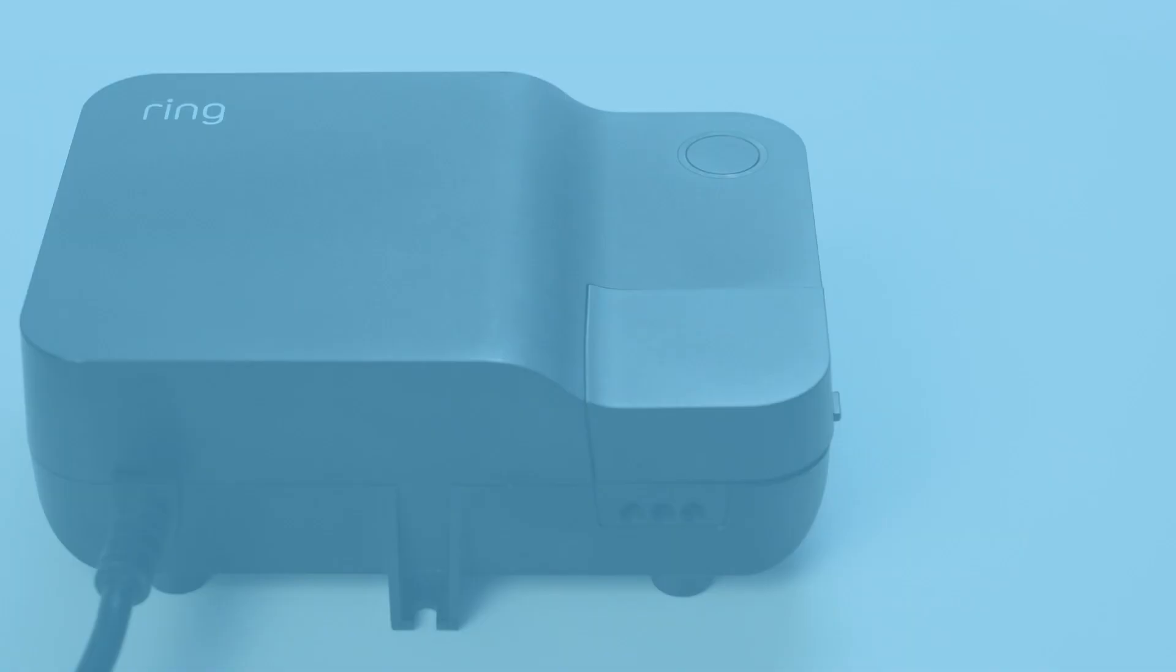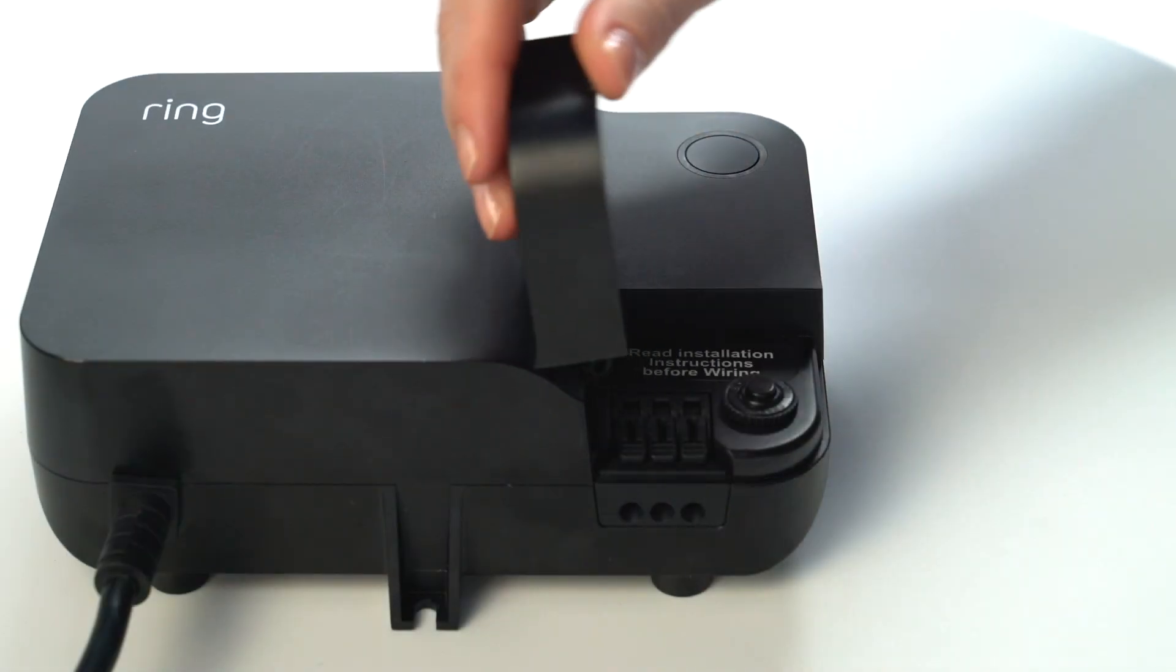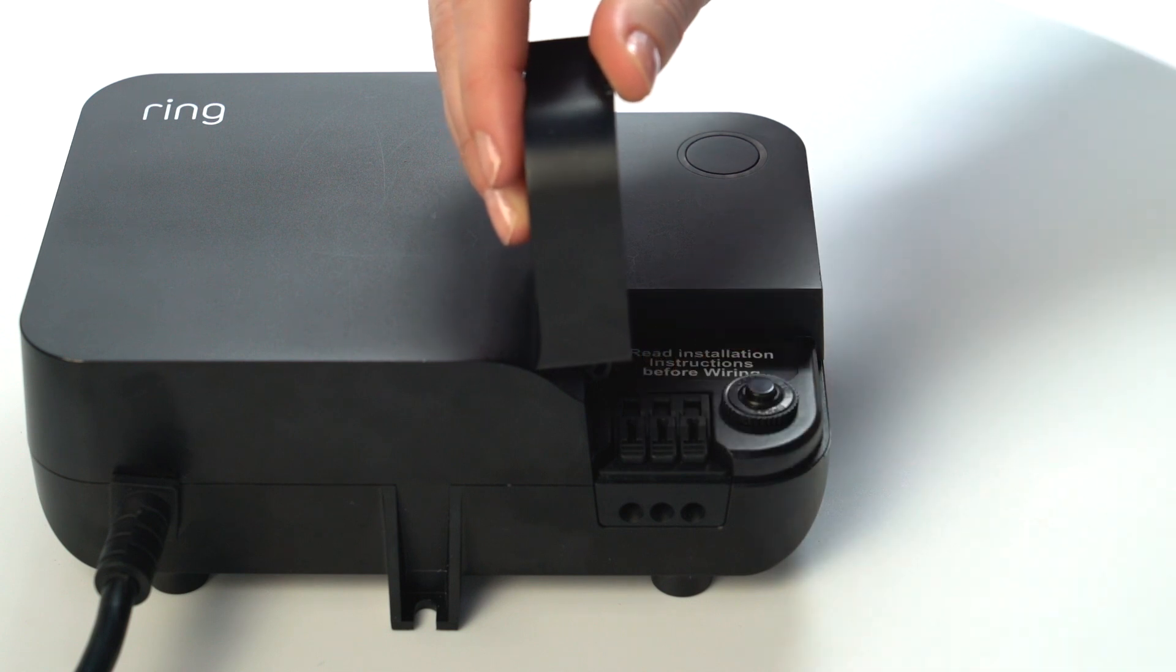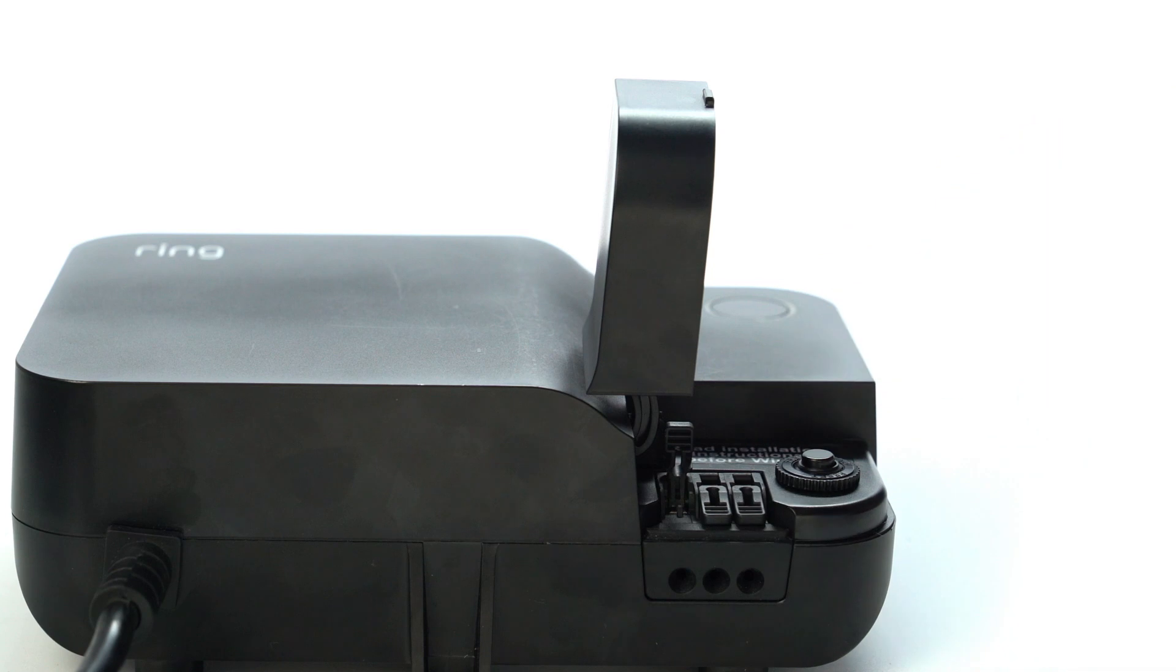Now it's time to connect your lights. Open the door on the transformer like this. You'll see three wire terminals. The terminal on the left is the common terminal. Flip up the lever above to open it.